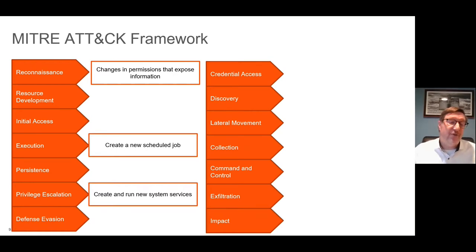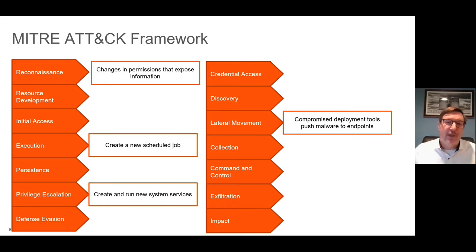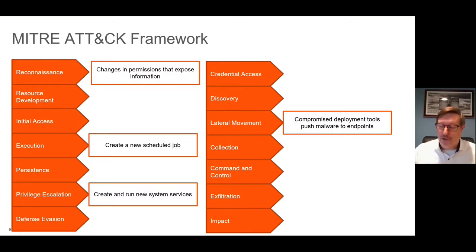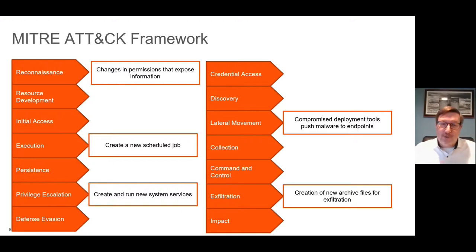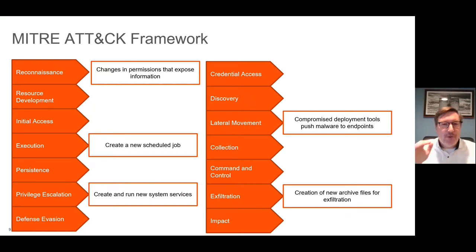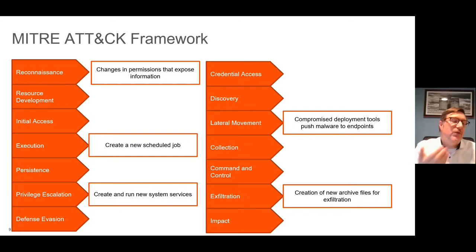For privilege escalation, an attacker might create and run new system services in order to establish escalated privilege — that's a change as well. On lateral movement, an attacker might compromise deployment tools in your environment to push malware to the endpoints — also a change. And on exfiltration, in order to exfiltrate data, the attacker might create files — maybe archive or zipped files — that have to be stored somewhere as they're created. That creation of a file is a change. You can see how change and the ATT&CK framework tactics are related to each other. Change occurs at every step in the process for an attacker.